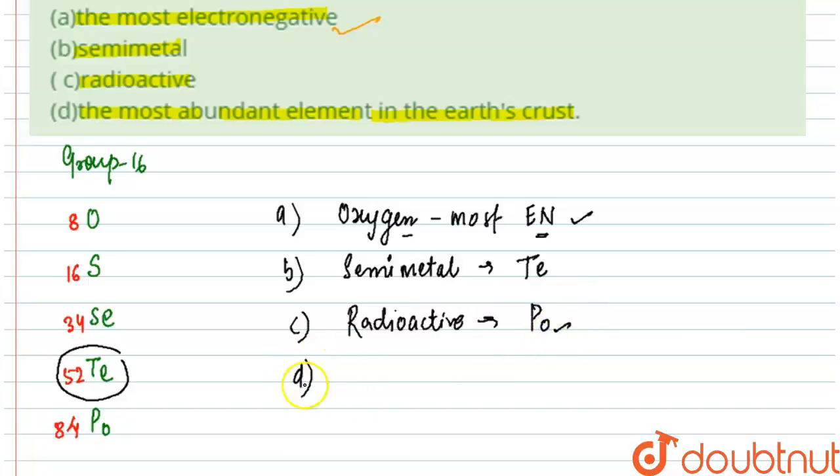Lastly, we need to find out the most abundant element in the earth's crust. In this group, we have oxygen that is the most abundant element in the earth's crust. I hope this is clear to you.